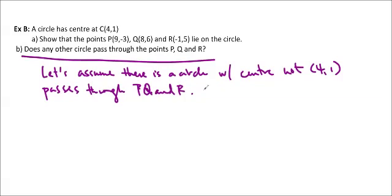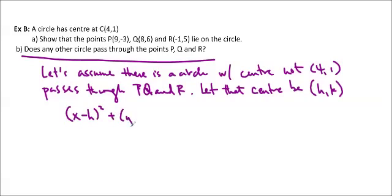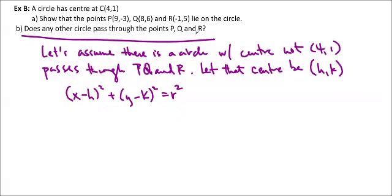So let that center be, let's call it HK. So basically we have a circle X minus H squared plus Y minus K squared equals R squared. If I plug these numbers in, I can find some equations and that will help me to solve for HK and R.